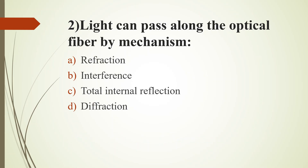Light can pass along the optical fiber by mechanism: Option A, Reflection; Option B, Interference; Option C, Total Internal Reflection; Option D, Diffraction. Answer is Option C, Total Internal Reflection.